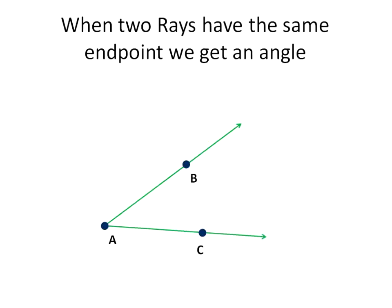And when two rays have the same end point, that is when you get an angle. So here we have ray AB and ray AC and they meet at the end point A and create this angle in between here.